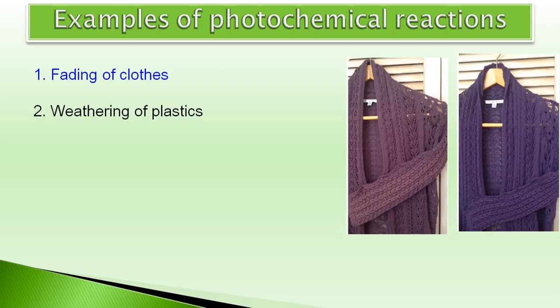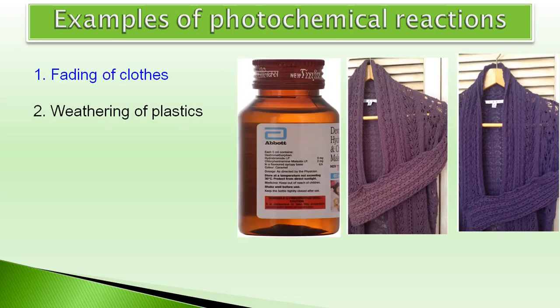You must have seen or read that on medicine boxes it is written to protect from direct sunlight. So medicines are protected from direct sunlight because the chemicals present in these medicines can react in the presence of sunlight to convert into some ineffective or other chemicals which may not give the expected benefit or the medicine may not work. And in other words, chemical changes in medicine due to sunlight is also an example of photochemical reaction.